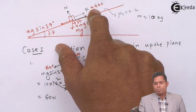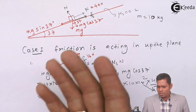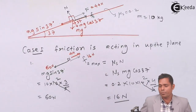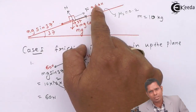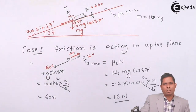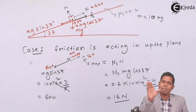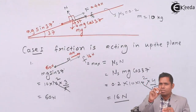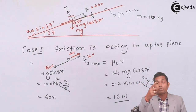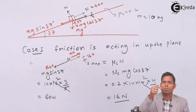If I increase beyond 44 Newton — suppose I apply 46 Newton — then the net force upward is 46 + 16 = 62 and downward is 60. The body would tend to move upward, so friction changes its direction to downward to prevent that upward motion. So if I increase the applied force by 2 Newton from 44 to 46, the friction decreases by 2 Newton — it is now 14 Newton still acting upward — to ensure the sum still equals 60.